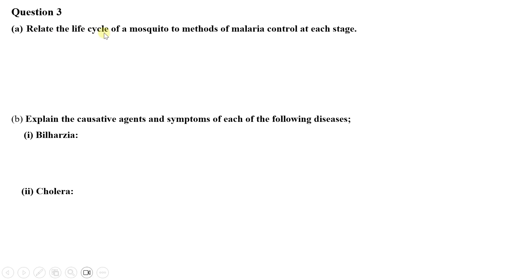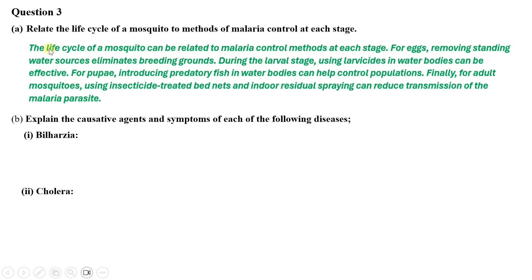Question three (a) — relate the life cycle of a mosquito to methods of malaria control at each stage: at the egg stage, removing standing water sources eliminates breeding grounds. During the larval stage, using larvicides in water bodies can be effective. For pupae, introducing predatory fish in water bodies can help control populations. For adult mosquitoes, using insecticide-treated bed nets and indoor residual spraying can reduce the transmission of the malaria parasite.